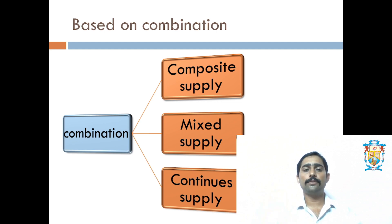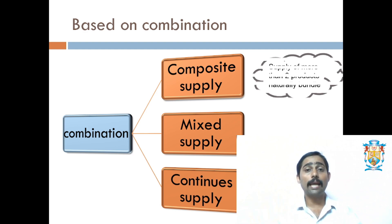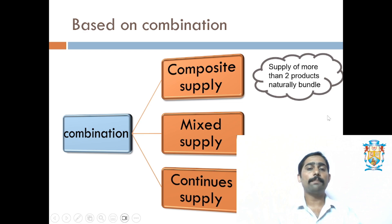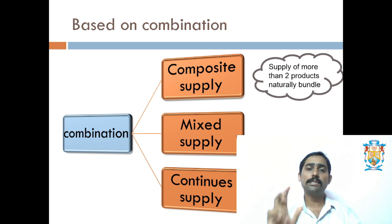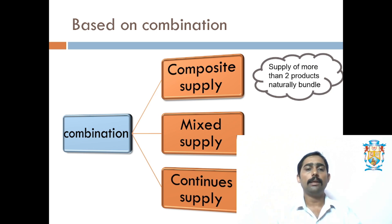Composite supply is where the products being supplied are related to one another — they are naturally bundled. Supply of more than two products that are naturally bundled together. For example, juice is supplied in a plastic bottle — juice and the plastic bottle are naturally bundled. Similarly, along with a fan, a regulator will be supplied — both things are naturally bundled.